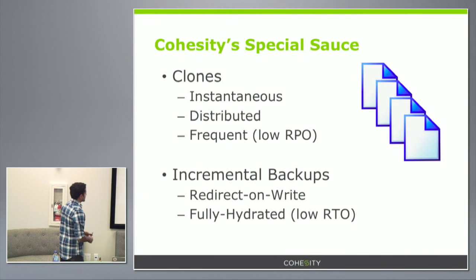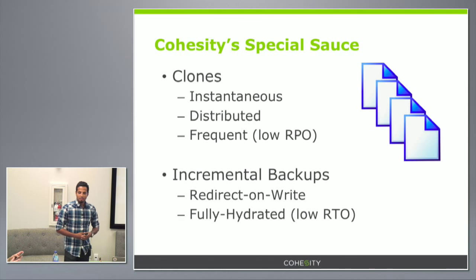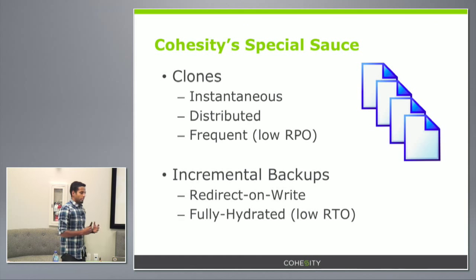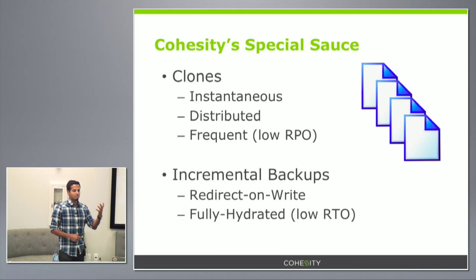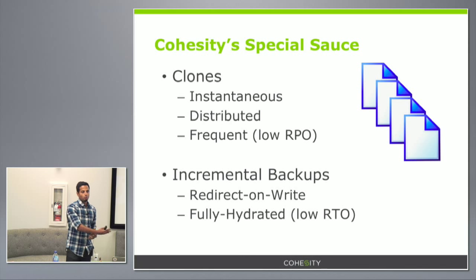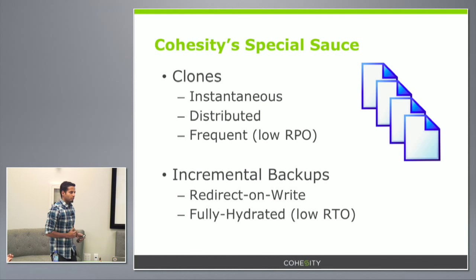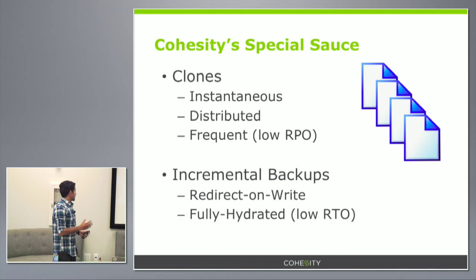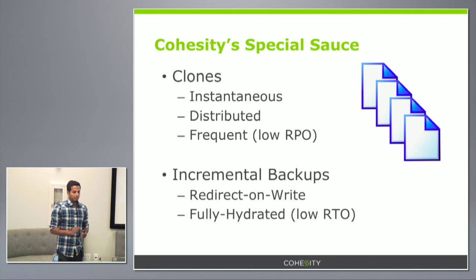You might ask how we do this. We have a special sauce — cloning technology inside a distributed file system. The clones we do have many special properties. We can take clones instantly — less than a second to clone any piece of data. It happens in a completely distributed manner, so a clone made on one node is immediately visible on any other node in the system. One of the most important things is that you can take these clones very frequently — there is no limit on how many clones you can take. This means you can go to any point in time and recover that data, allowing you to achieve a low RPO.